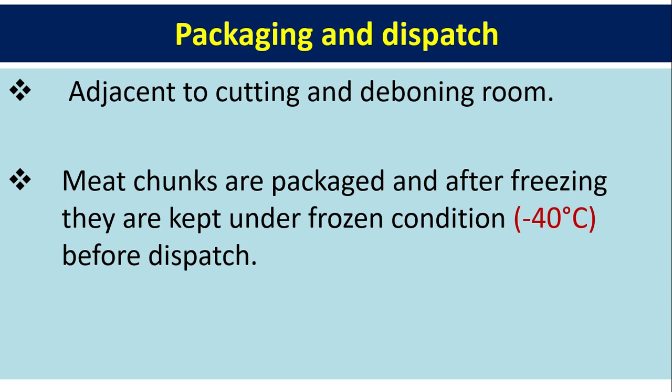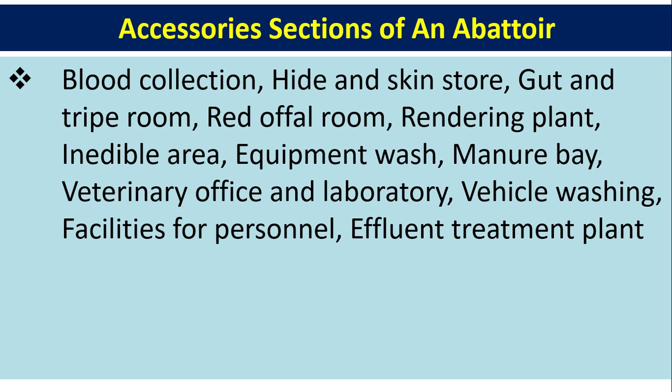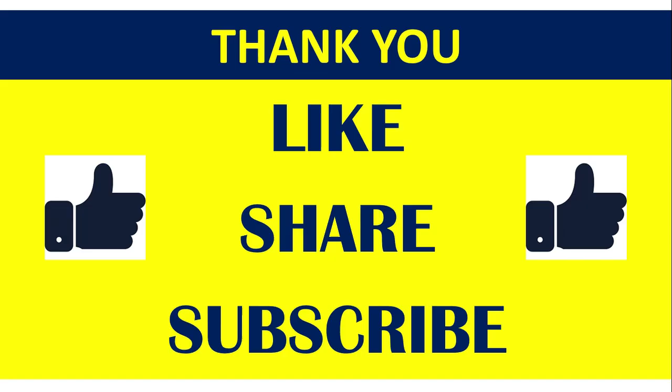Accessory sections of an abattoir include blood collection, hide and skin store, and effluent treatment plant. Thank you — if you like this channel, please share and subscribe, and don't forget to click the bell button for notifications.